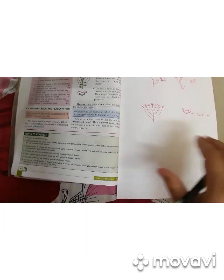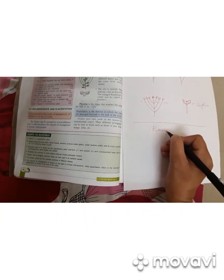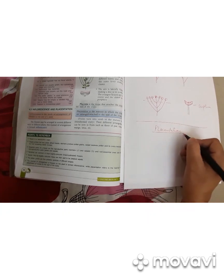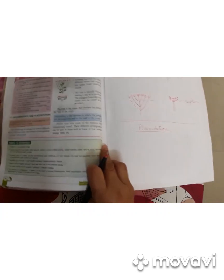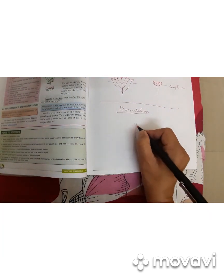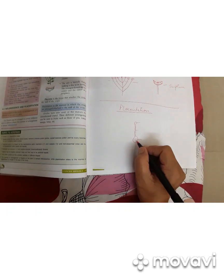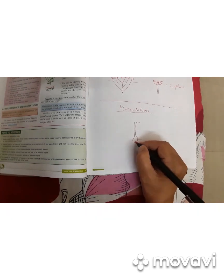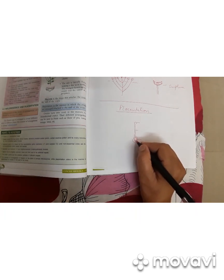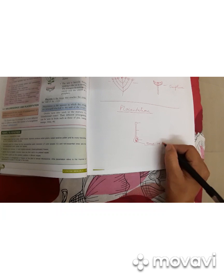The next topic is placentation. Placentation is the manner in which the ovules are arranged or attached to the walls of the ovary. Each female reproductive part has a stigma, style, and ovary. Inside the ovary there are chambers — we call them locules. There may be one locule, and if there is one locule there will be only one ovule. This ovule is attached by a soft tissue made up of parenchyma cells — we call it placenta.